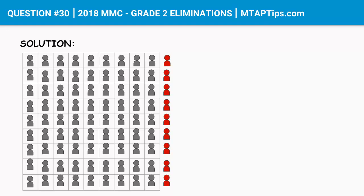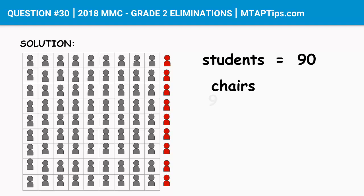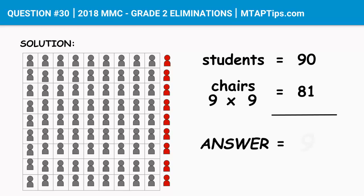To solve that, first let's get the total number of students, which is 90. Then the number of chairs — the janitor set up 9 rows with 9 chairs in each column, so we multiply: 9 times 9 equals 81. Now to find the number of students without chairs, we subtract 81 from 90. So 90 minus 81 equals 9. There are 9 students that don't have chairs.